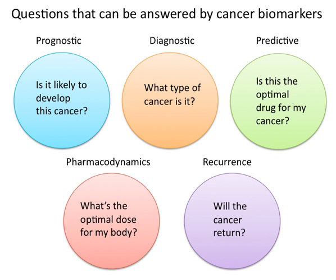Cancer biomarkers can also be useful in establishing a specific diagnosis. This is particularly the case when there is a need to determine whether tumors are of primary or metastatic origin. Researchers can screen the chromosomal alterations found on cells in the primary tumor site against those found in the secondary site. If the alterations match, the secondary tumor is identified as metastatic; if they differ, it is identified as a distinct primary tumor.